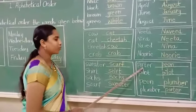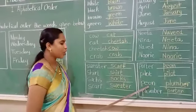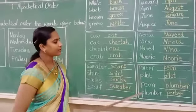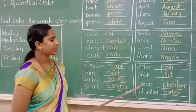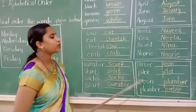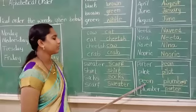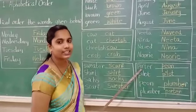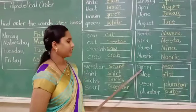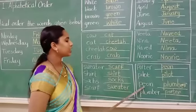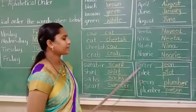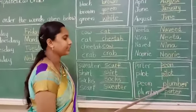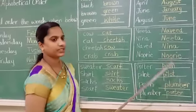And the next one: porter, pilot, peon, plumber. Here also first letter is same. So what are these children? These are helpers — people who help us. Now we should see the second letter to write this in alphabetical order — that is O, I, E and L. Which one will come first? E. So we should write peon, pilot, plumber, porter. Is it clear children?